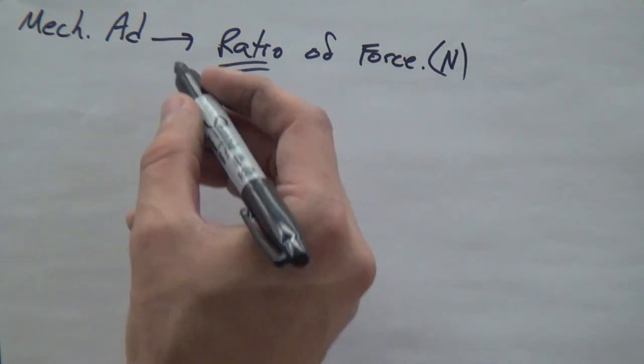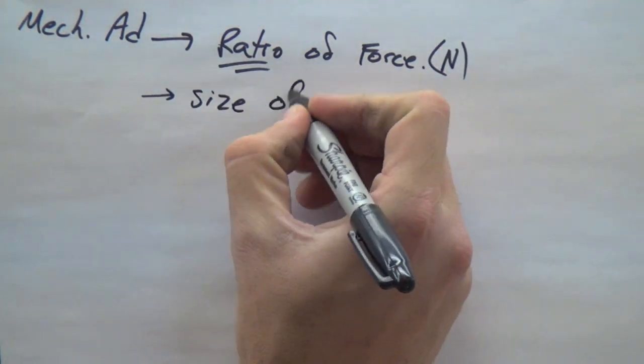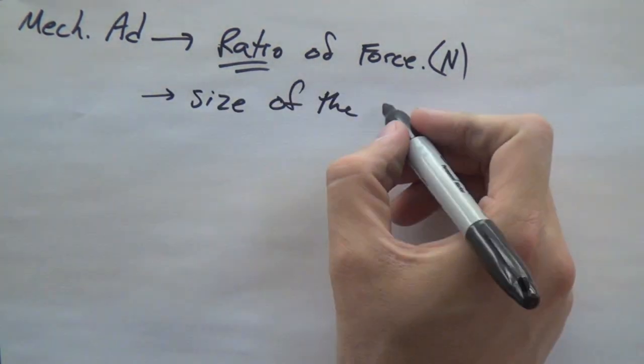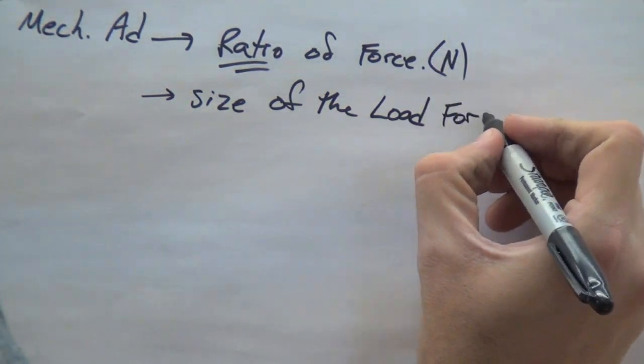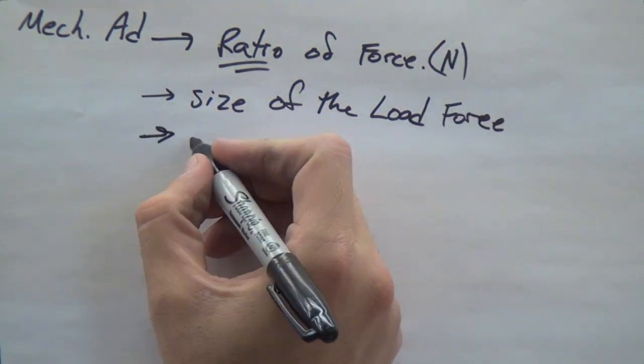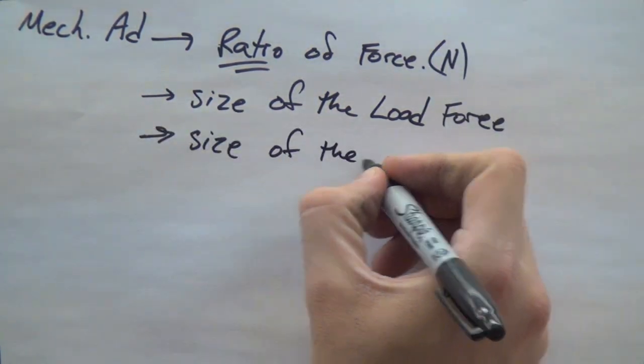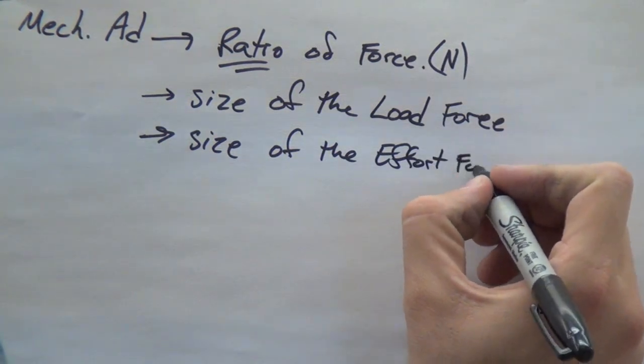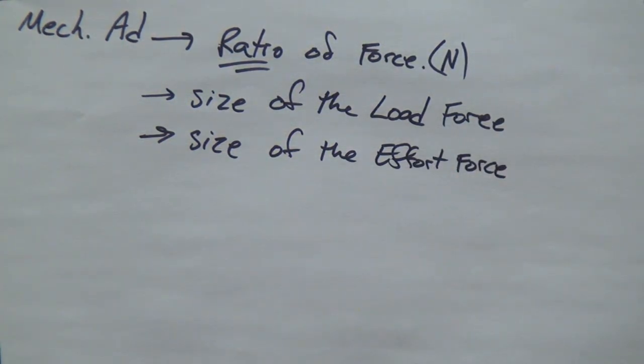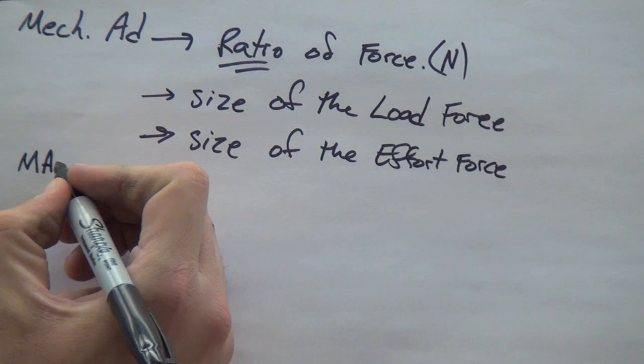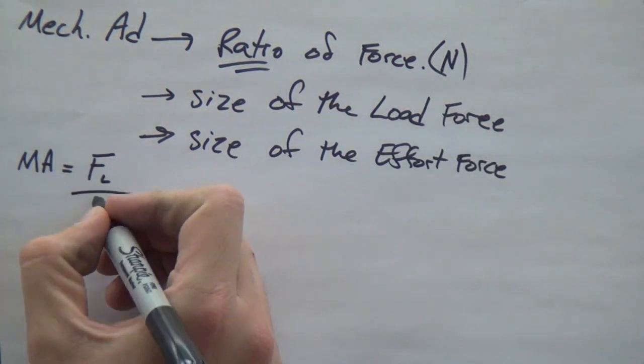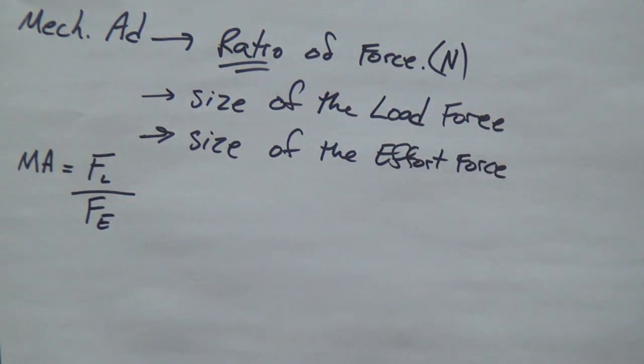Now, the first type of force that we need is the size of the load, which usually is the weight. Gravity times mass. And then we have the size of the effort. It's our work that we put into that lever. So, the mechanical advantage formula is the force of the load over the force of the effort.